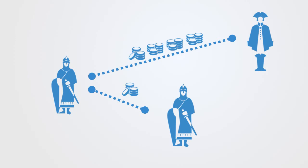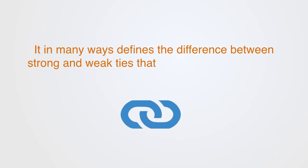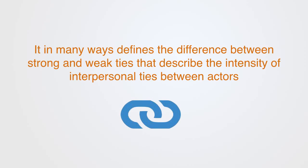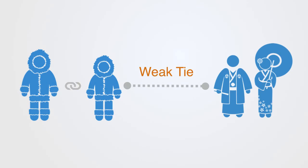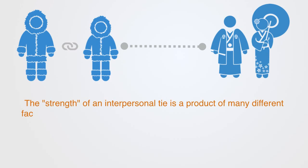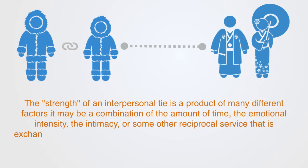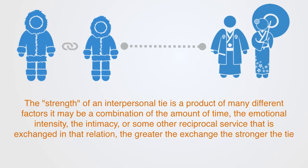This in many ways defines the difference between strong and weak ties that describe the intensity of interpersonal ties between social actors. A strong tie is between two agents that interact frequently and typically share similar attributes — connections that are typically easier for us to enact. A weak tie connects people between different social circles, which can be more challenging as they require agents to overcome some difference, but they also expose the person to novel phenomena and information. The strength of a tie is a product of the amount of time, emotional intensity, intimacy, or reciprocal service exchanged — the greater the exchange, the stronger the tie.